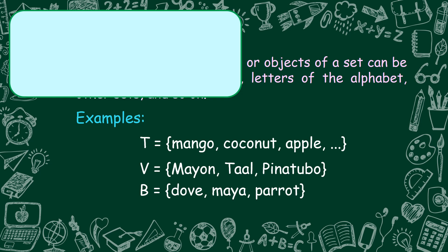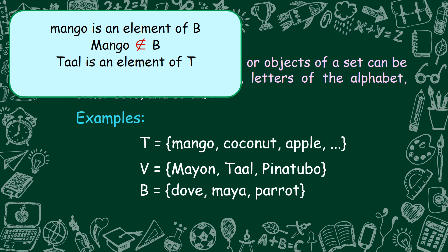Let us have a quick true or false question. First: mango is an element of B — true or false? Mango is not an element of B, so the answer is false. Next: Taal is an element of T — true or false? It is false. Taal is not an element of T. Notice that the symbol for 'not an element' is the same as the element symbol but with a slash through it — it is read as 'not an element.'